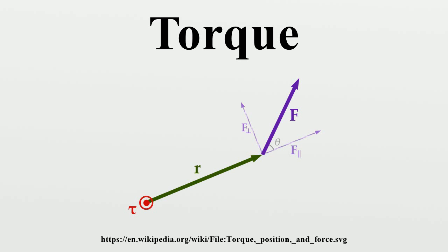Torque has dimensions of force times distance, symbolically L²Mt⁻². Official SI literature suggests using the unit newton meter or the unit joule per radian. The unit newton meter is properly denoted N·m or Nm. This avoids ambiguity with mN (millinewtons). The SI unit for energy or work is the joule. It is dimensionally equivalent to a force of one newton acting over a distance of one meter, but it is not used for torque. Energy and torque are entirely different concepts, so the practice of using different unit names helps avoid mistakes and misunderstandings. The dimensional equivalence of these units is not simply a coincidence.